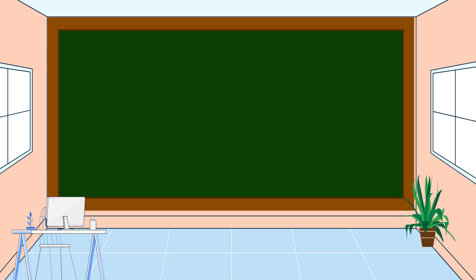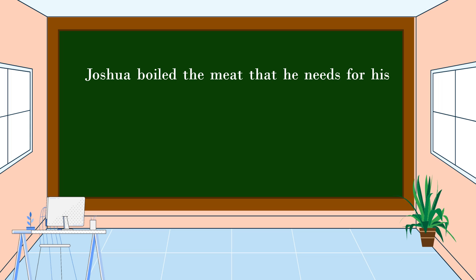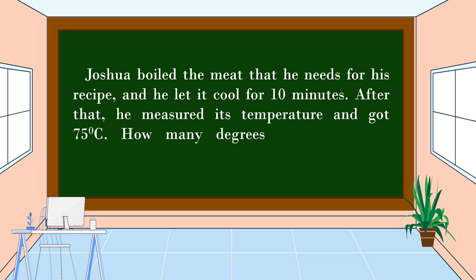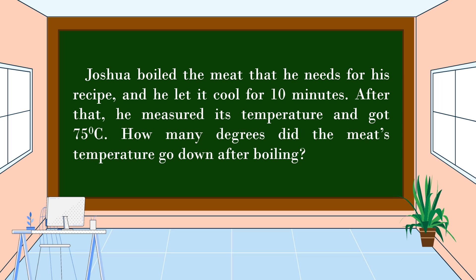Our second problem is a non-routine problem. Joshua boiled the meat that he needs for his recipe and let it cool for 10 minutes. After that, he measured its temperature and got 75 degrees Celsius. How many degrees did the meat's temperature go down after boiling?